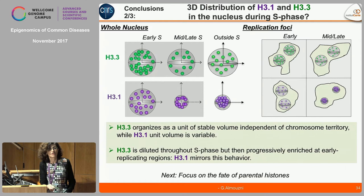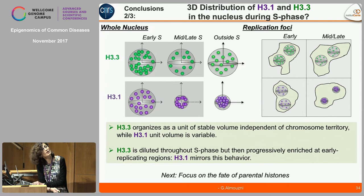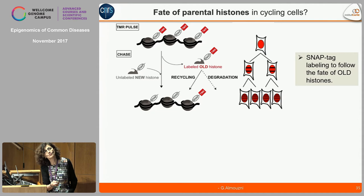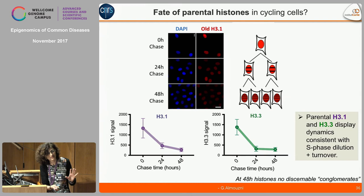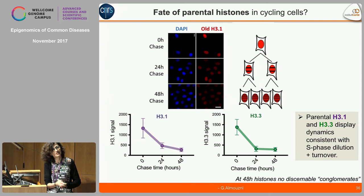The question is what happens to the parental histones. We can use the SNAP-tag labelling by pulse at the beginning and then follow histones through several cell divisions. For H3.1 you can see a dilution of the staining through division, and after 48 hours you reach a similar level, which we thought was a good comparison point for the state of parental histones. We then analysed the histone detection within the EdU foci.